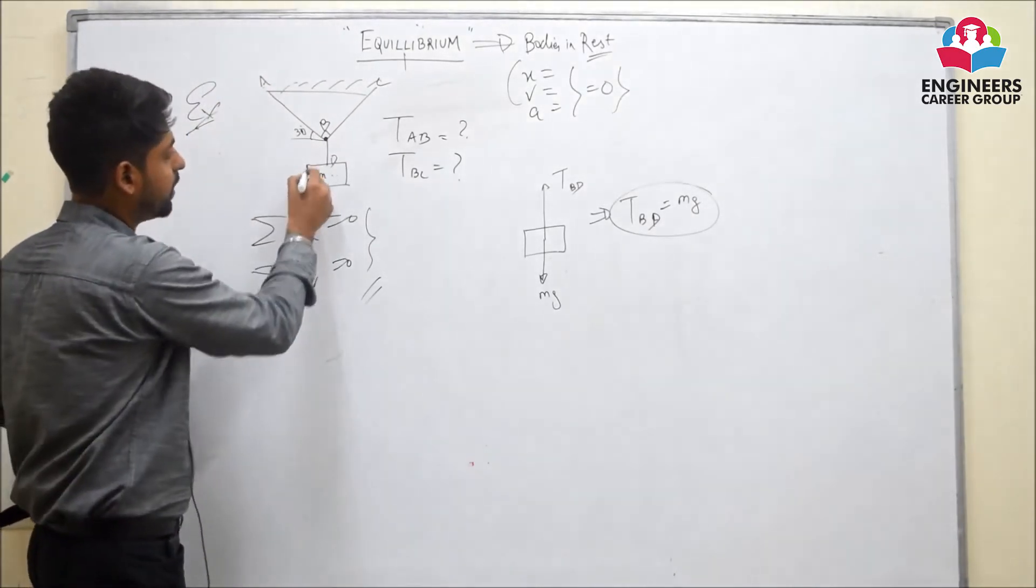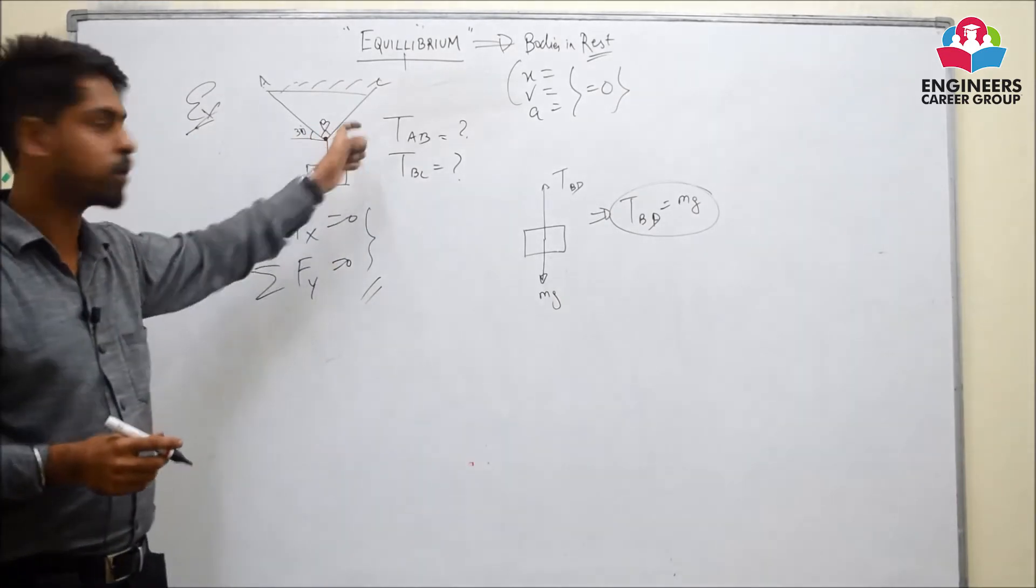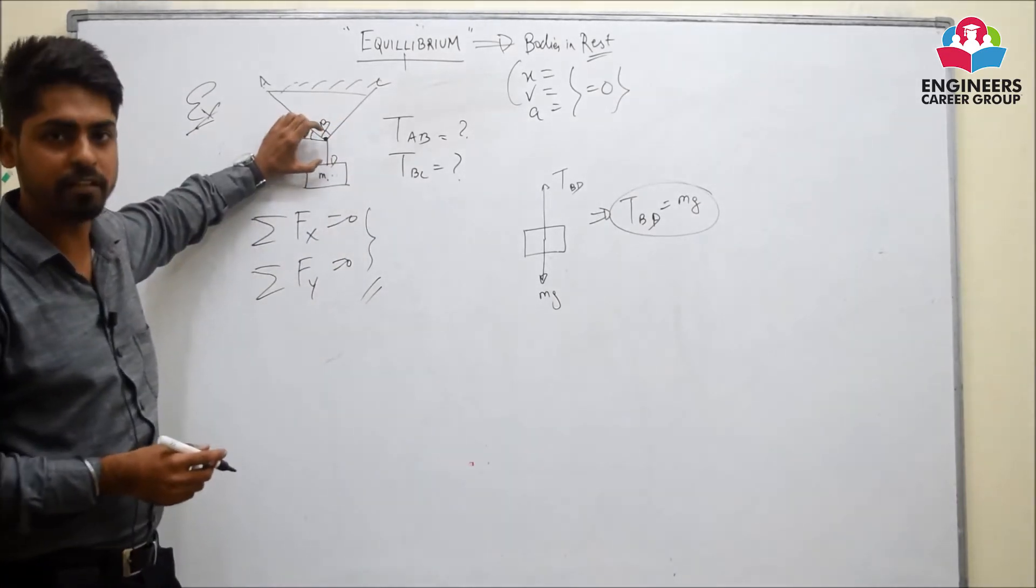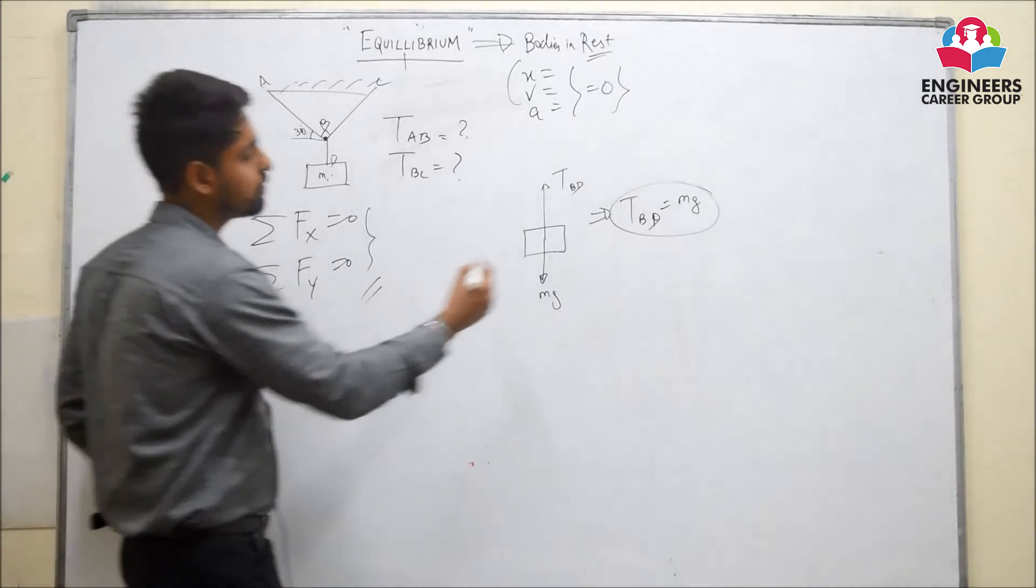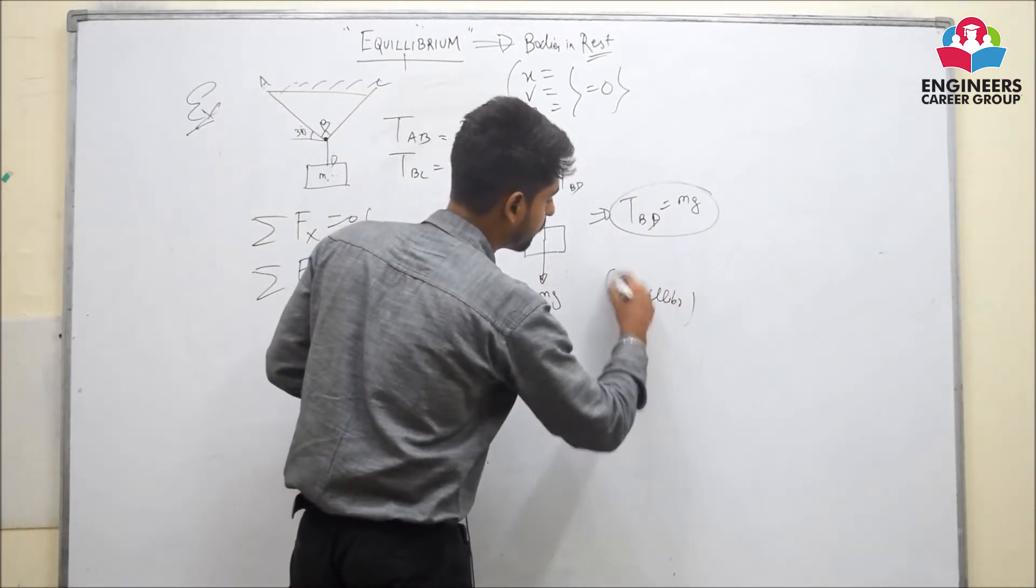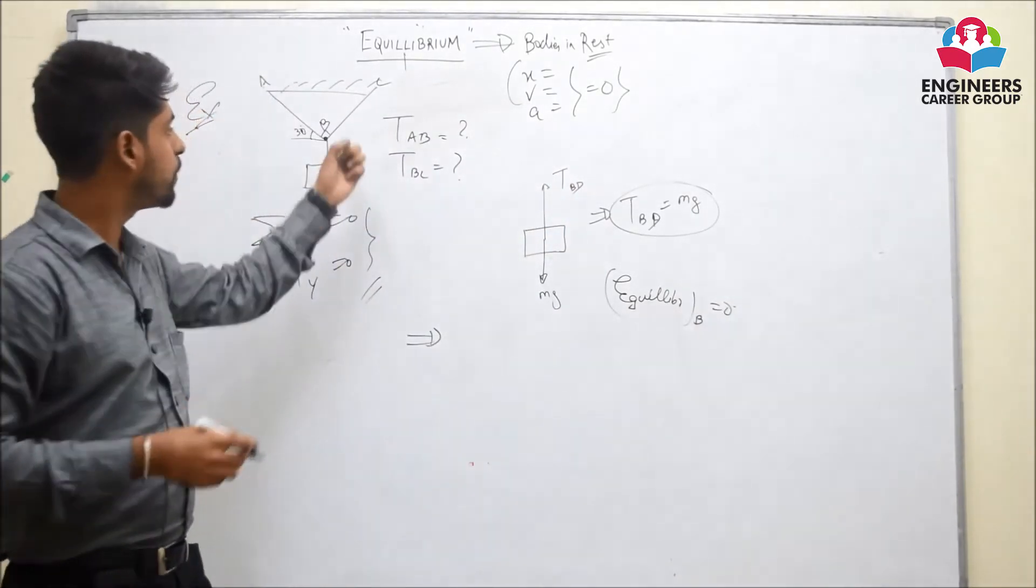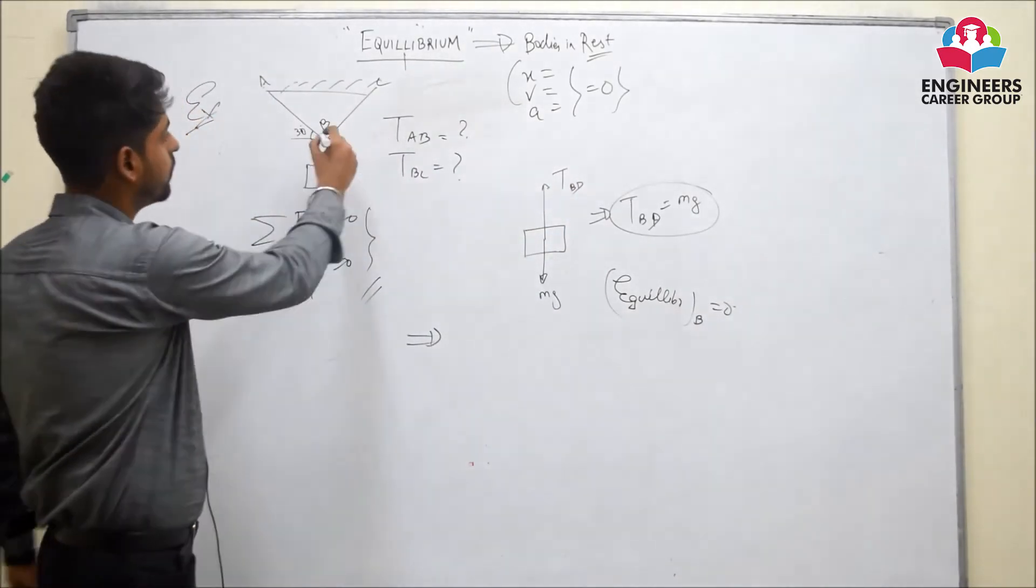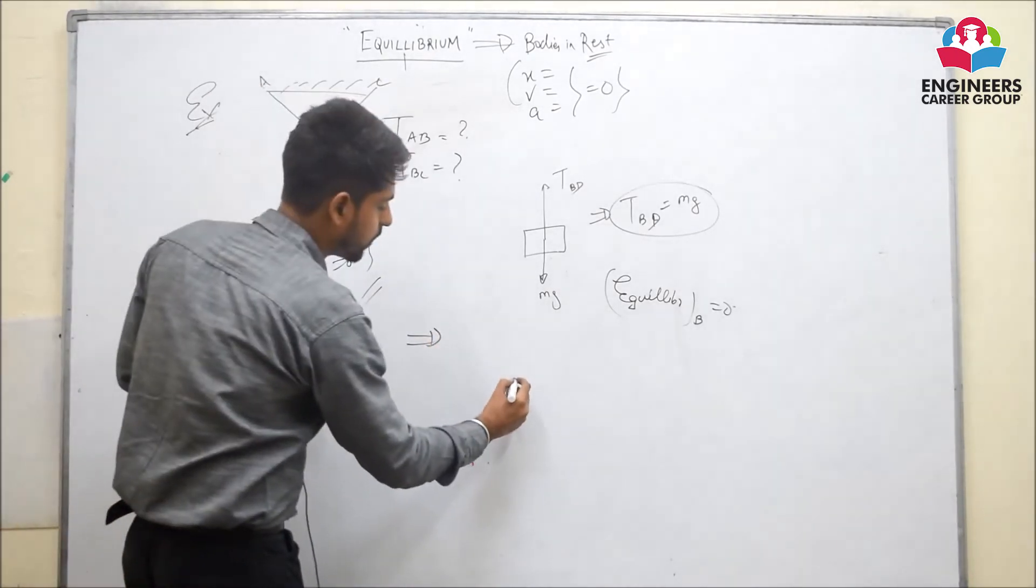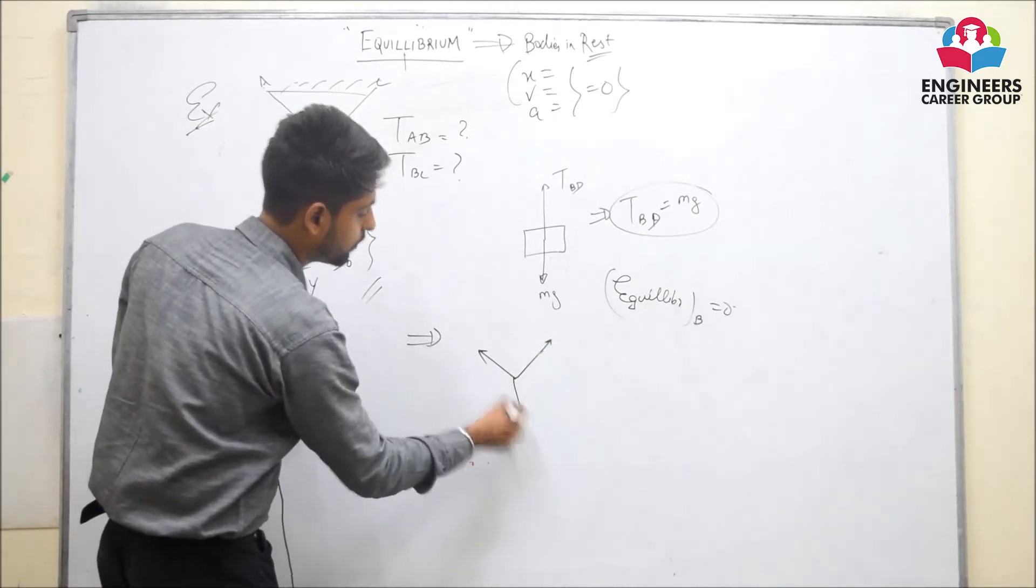Since body is in equilibrium, so this point, static point B is also in equilibrium because these two are rigidly fixed with each other. So, what we will do is we will consider the equilibrium of point B. Now, what does this equilibrium of point B imply? That this point is under the action of three forces 1, 2 and 3.